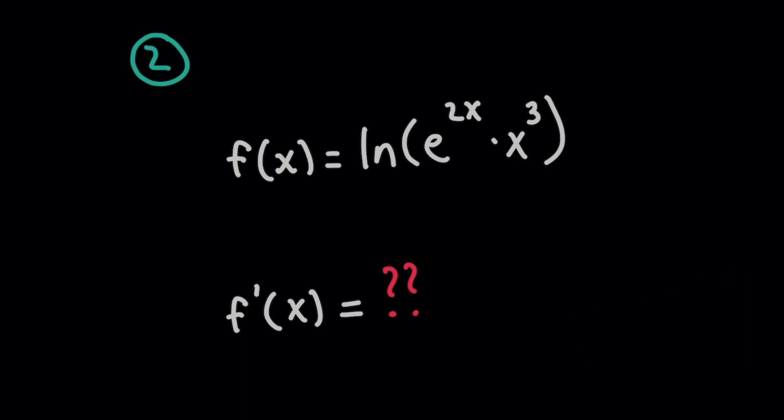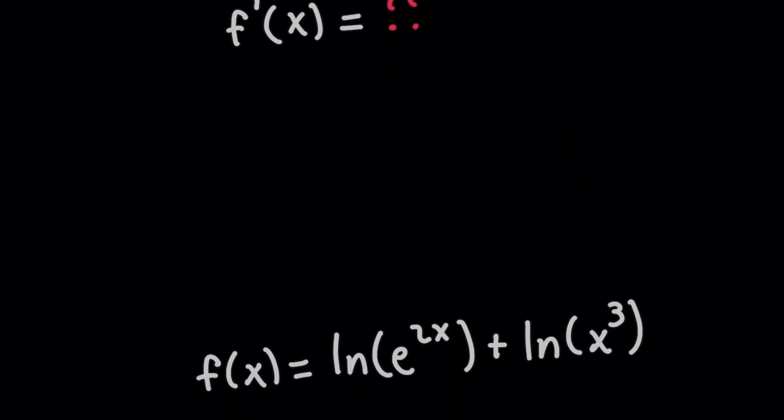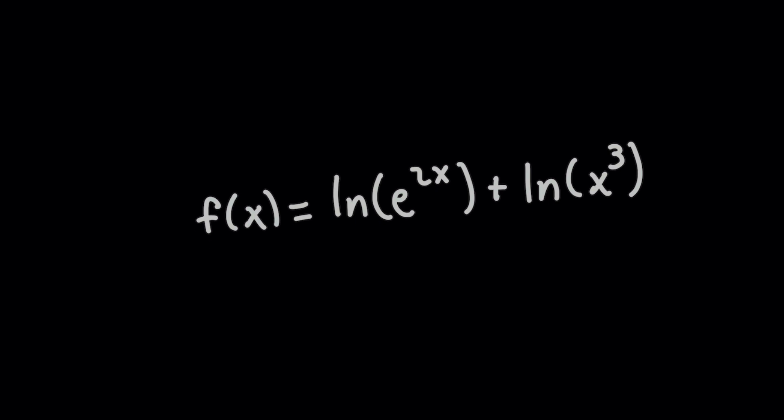You can actually save time on this derivative if you first simplify f of x. And believe it or not, you won't even need to use the product rule. Because with f of x, since it's a natural log of a product, remember that you can rewrite a natural log of a product this way. And check this out.